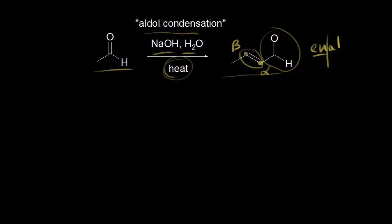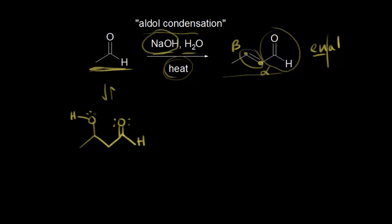To form this enal product, we start with the aldol that we just made in the previous reaction — acetaldehyde with sodium hydroxide can form an aldol as we just saw. This is a base-catalyzed aldol condensation. The aldol has a hydrogen and an oxygen with a hydrogen. Looking at our aldol, the carbon right next to the carbonyl is our alpha carbon, and there are still two acidic protons on that alpha carbon, so I'll draw one in.